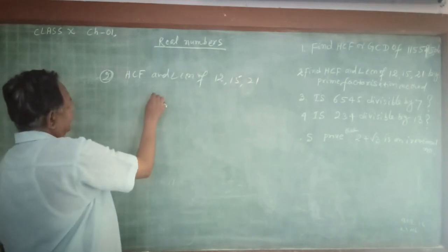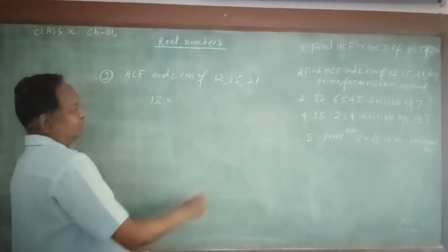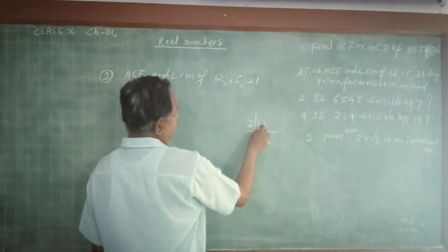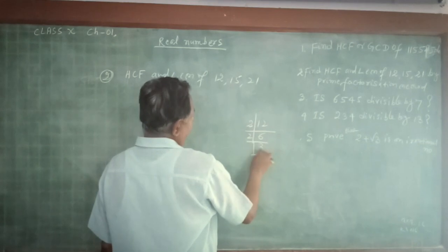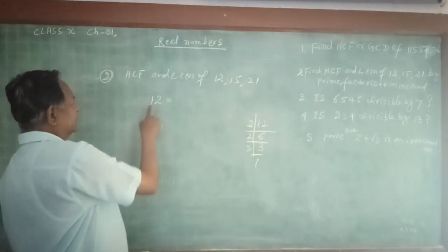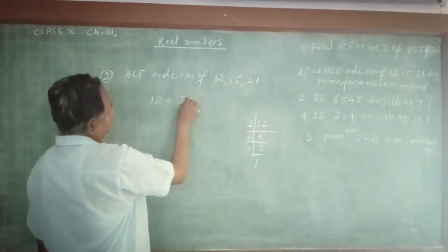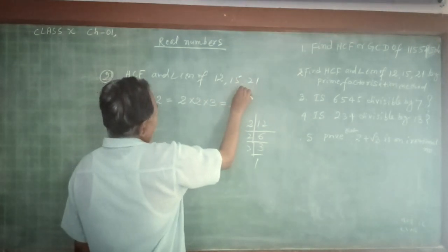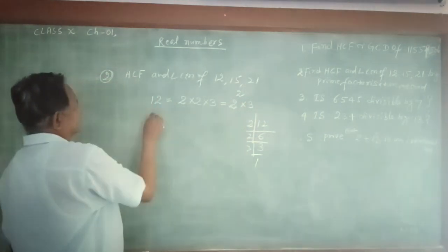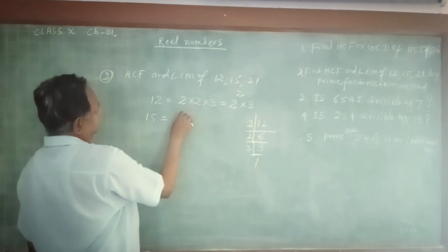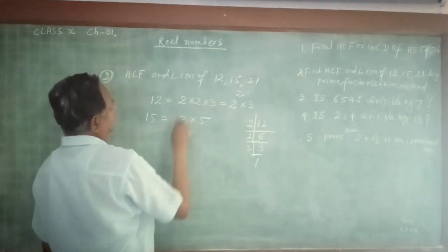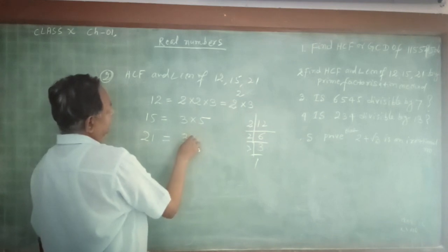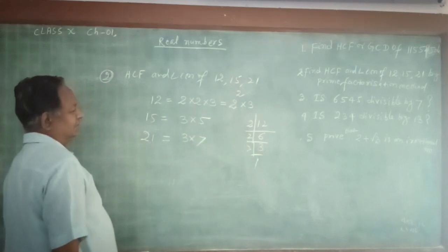So first we will find the prime factors of 12. Dividing by 2: 12 = 2 × 2 × 3, which can be written as 2 raised to the power 2, into 3. Similarly, prime factorization of 15 can be written as 3 × 5. And 21 can be written as 3 × 7.